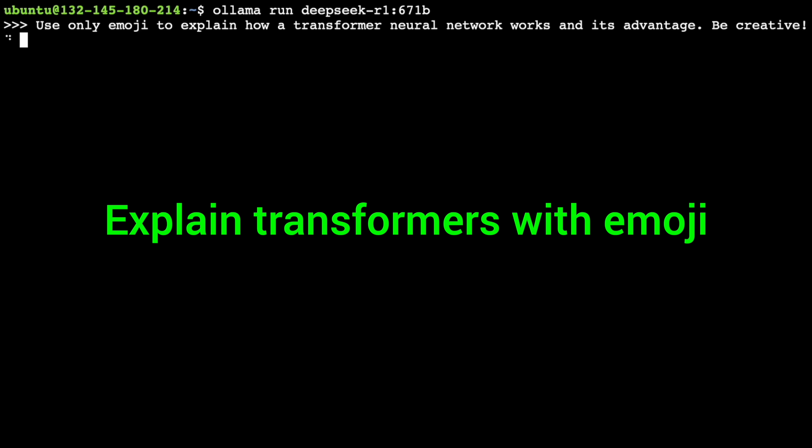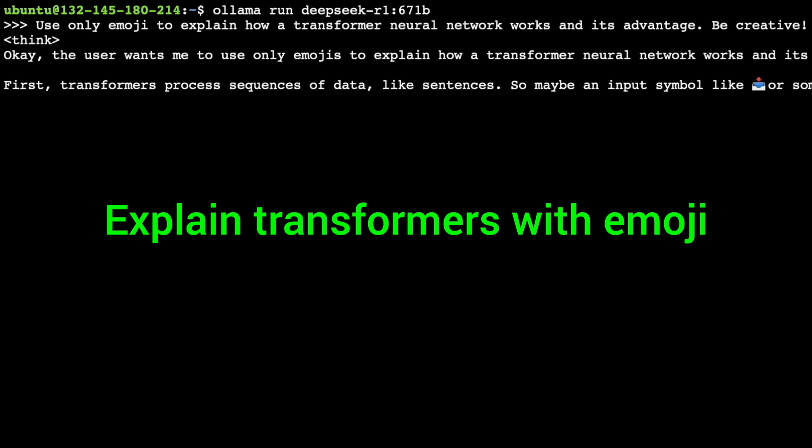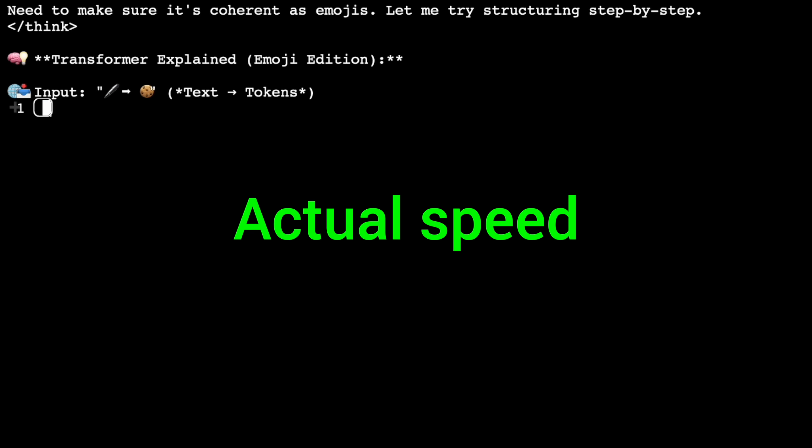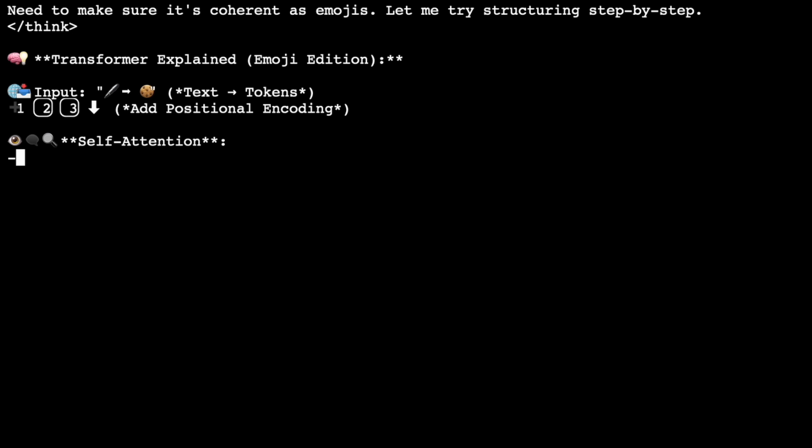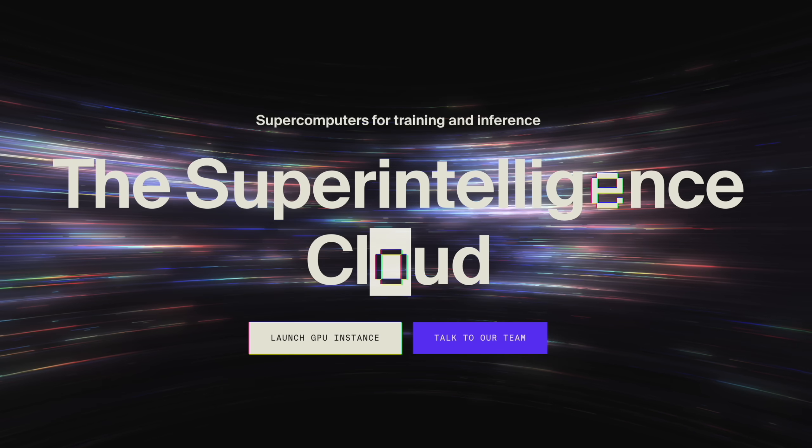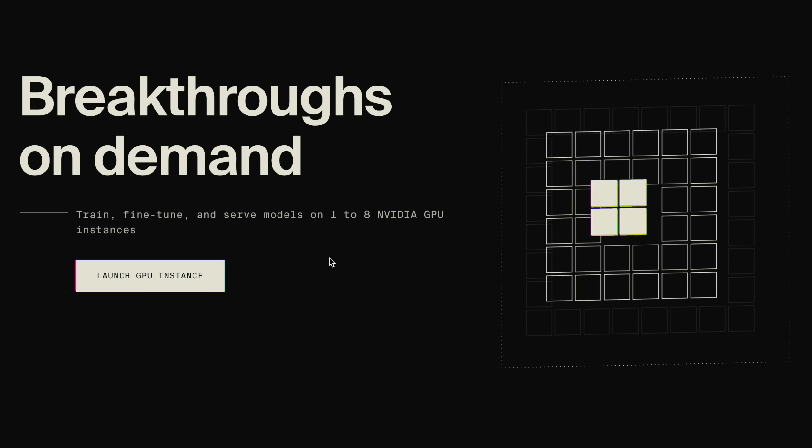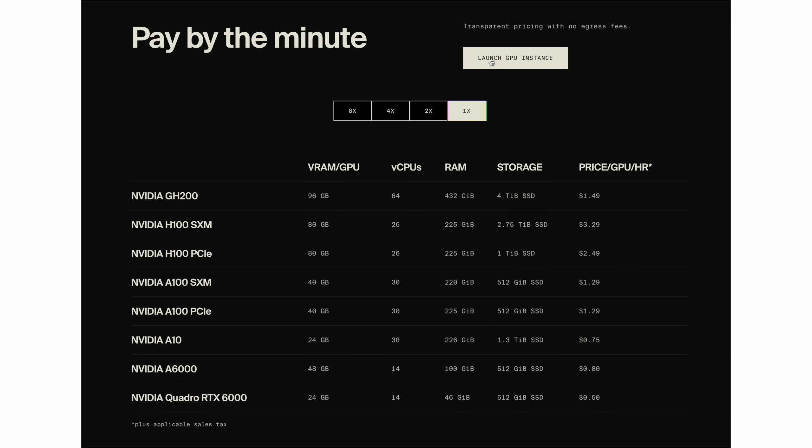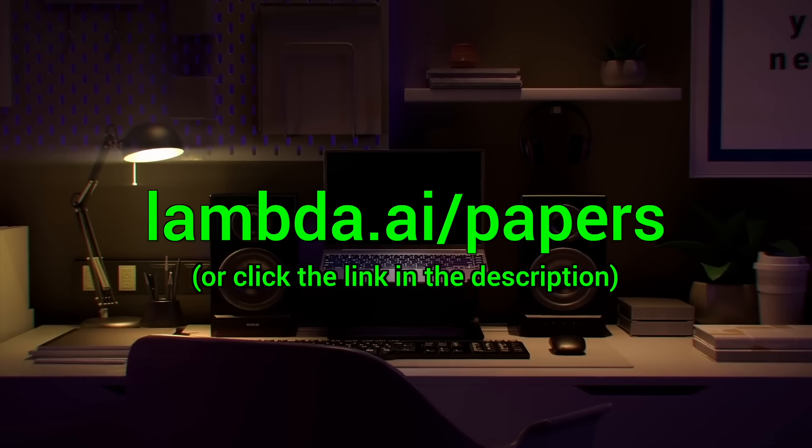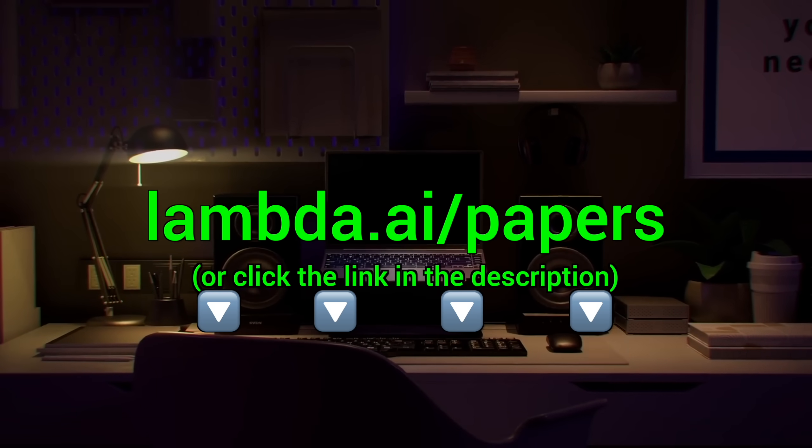Here you see me running the full DeepSeek AI model through Lambda GPU Cloud. 671 billion parameters, running super fast and super reliably. This is insane, I love it, and I use it on a regular basis. Lambda provides you with powerful NVIDIA GPUs to run your own chatbots and experiments. Seriously, try it out now at lambda.ai.papers or click the link in the description.